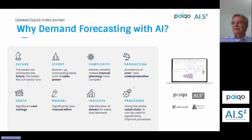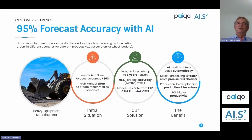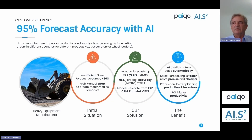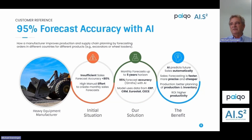Let me go into the first example where the second effect showed a big impact. We have a company which is a heavy equipment manufacturer — one of the biggest in the world. They produce things like wheel loaders, excavators — the big machines you need for constructing buildings. Their process was as described before: they asked sales people across all regions to provide their demand forecast, and ended up with less than 80% accuracy.